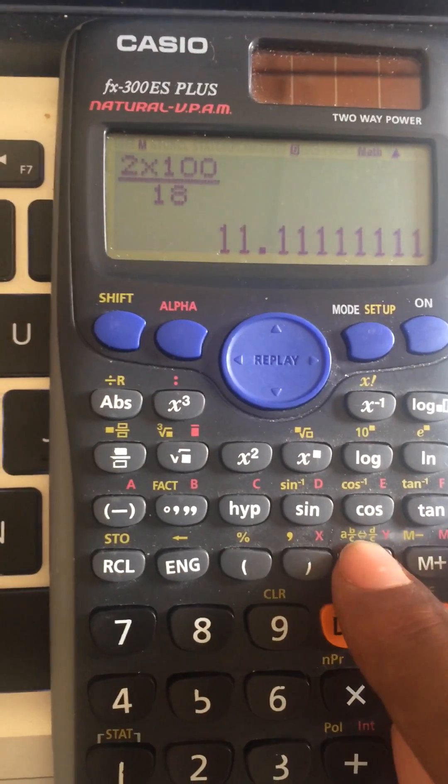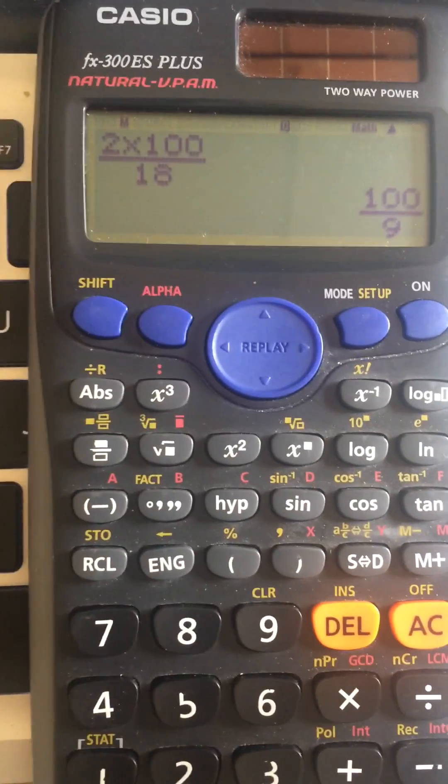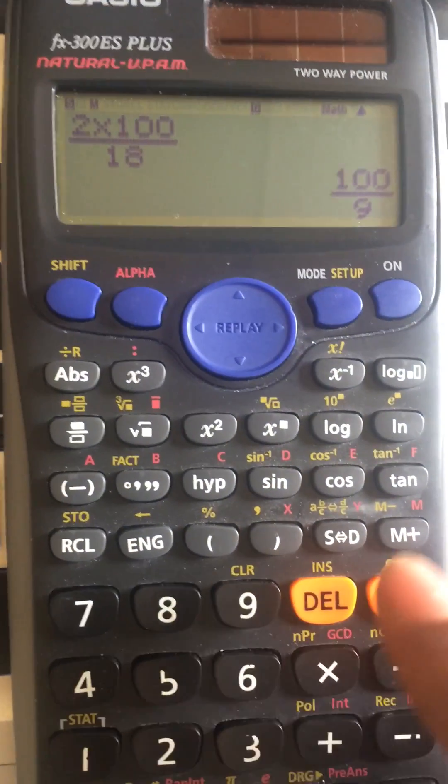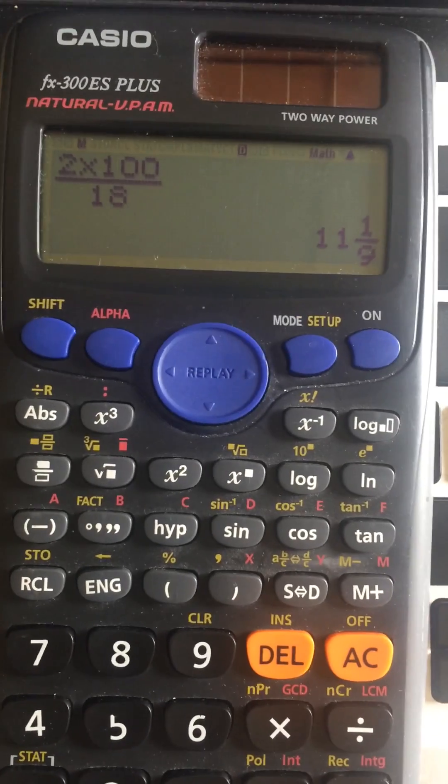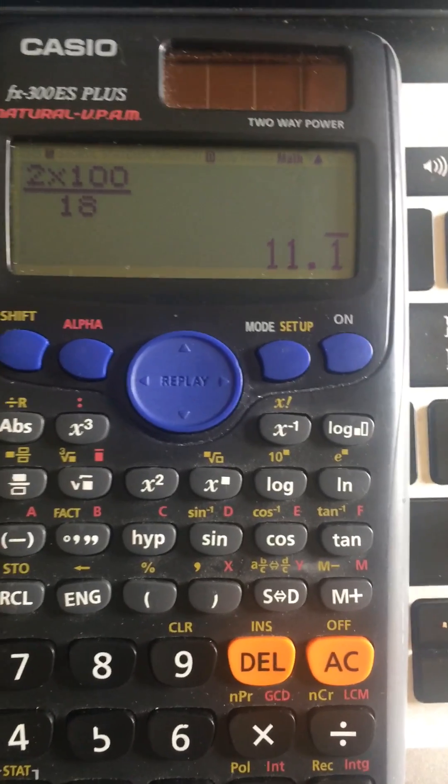If I wanted this answer to be in mixed fractions, I can press Shift and then that same button again. So I have mixed fractions, and if I press that button again, I can get my answer in decimal places.